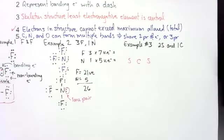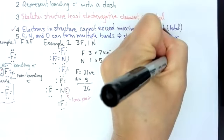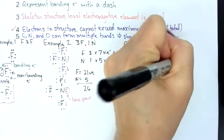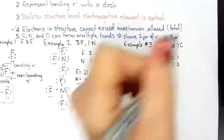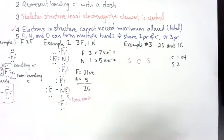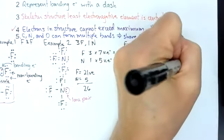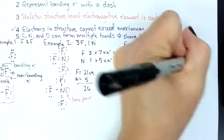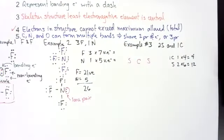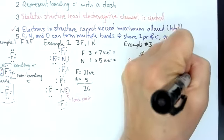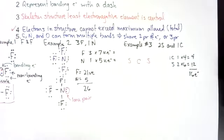Rule number four is that electrons in the structure can't exceed the maximum. So I need to know what my maximum is. I've got one carbon and two sulfurs. Carbon has four valence electrons and sulfur has six. So this is going to be 12 and that's going to be four. So I have a total allowed electrons of 16.